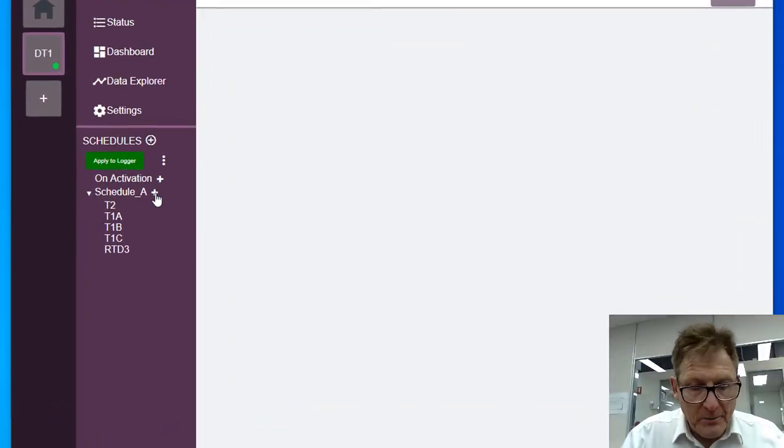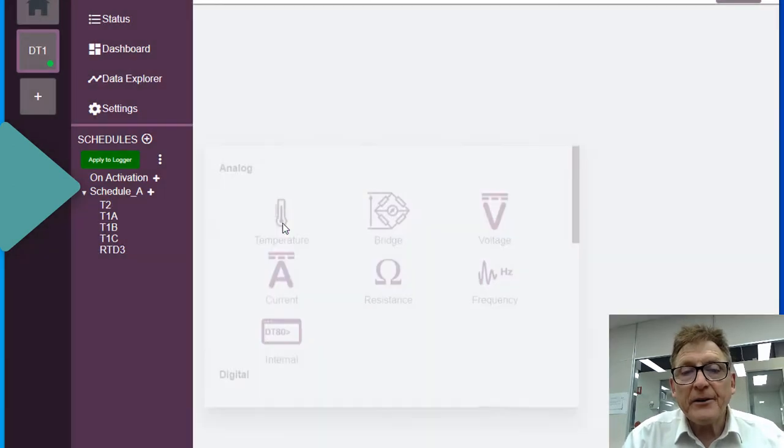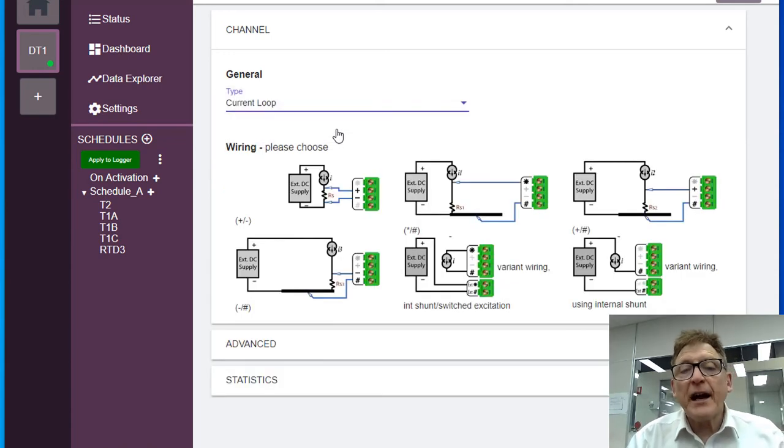So now I need to click on the plus beside the schedule and add current. In this case, I'm going to add a current loop. Now when it's current loop, it measures between zero and 100%. When you're measuring current, you have to scale it between four to 20 milliamps.